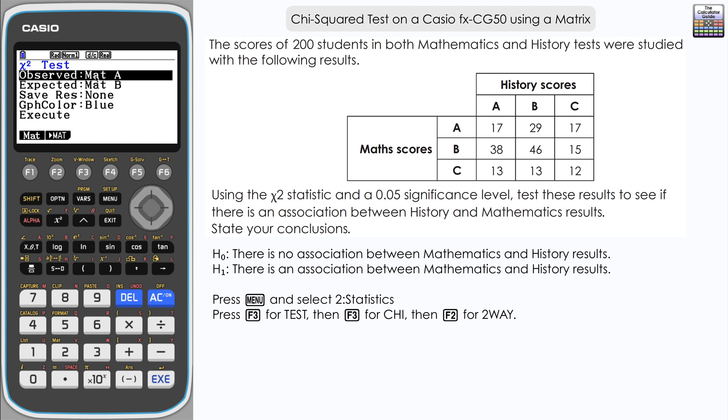By default, our observed data is inputted in matrix A and our expected data would be matrix B. We can save the result if we want to, and we've also got a color if we're going to produce a graph. You can see there's two options down at the bottom.